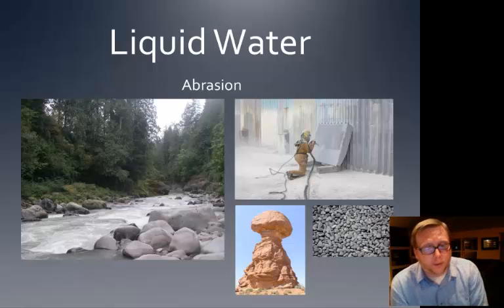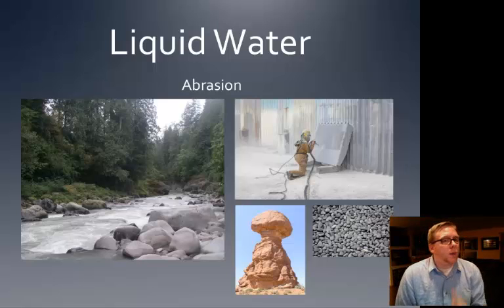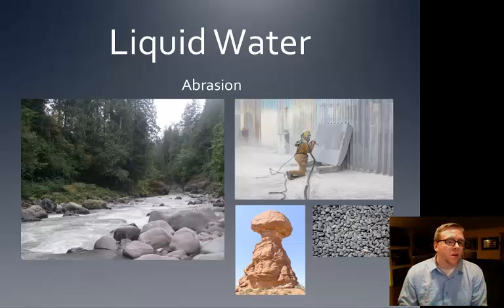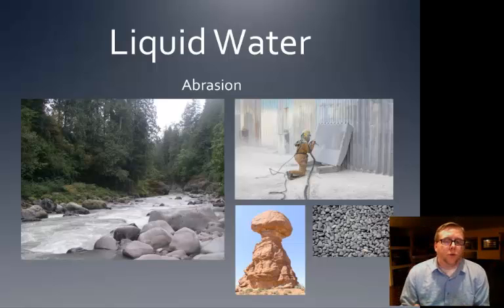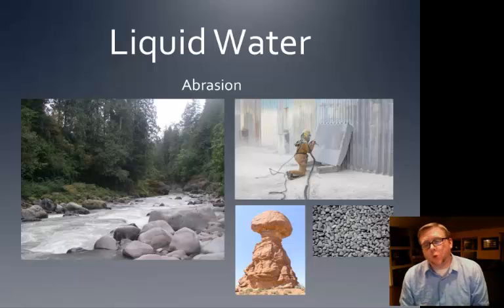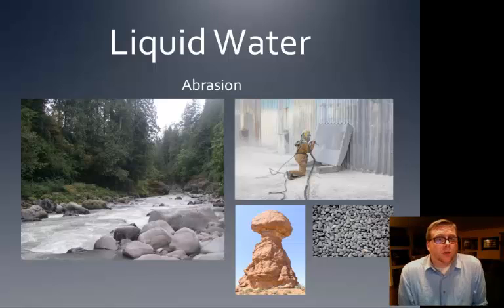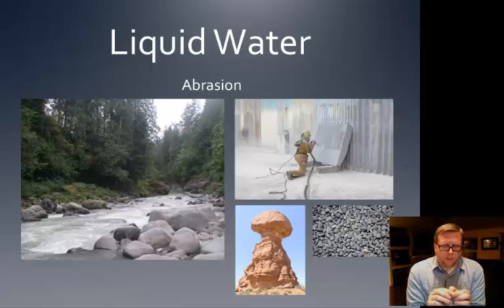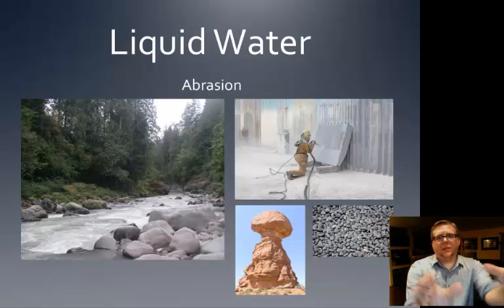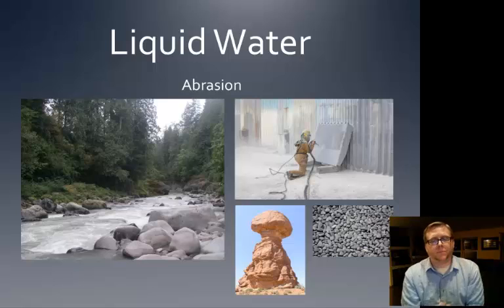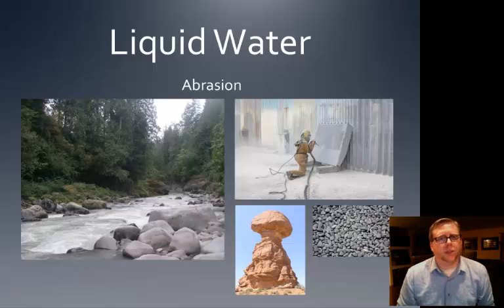For physical weathering, you can tell: near the start of a river, rocks might be bigger and more jagged. As you go further down closer to the ocean, they become smoother and smaller. Eventually they become silts and clays — microscopic, almost perfectly round particles. It's all this process of abrasion.